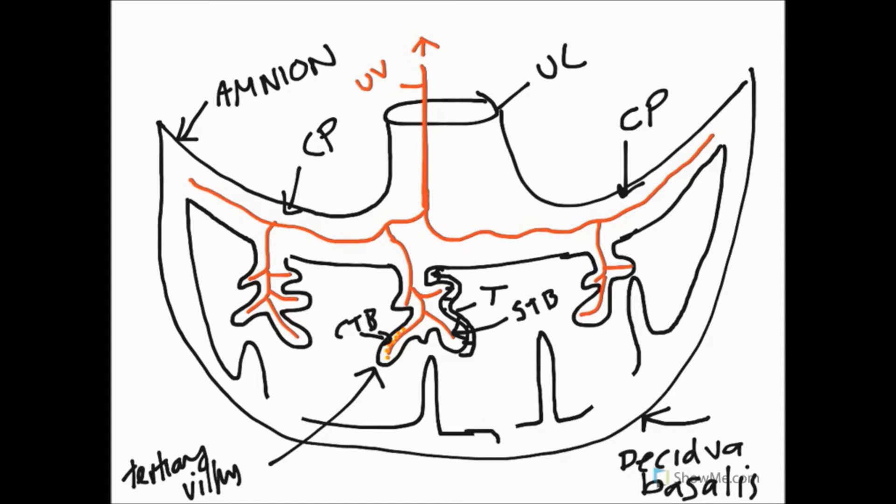And so we're going to get some vessels that are going to kind of go like this. So some indentations into the decidua, and we're going to get these blood supply coming from mum, and these are known as the endometrial arteries and veins. There'll be some veins in there as well, draw on the veins. And these feed into the intervillus space.